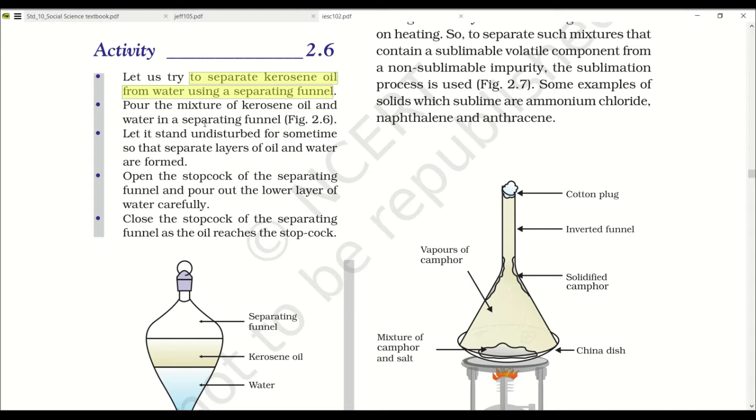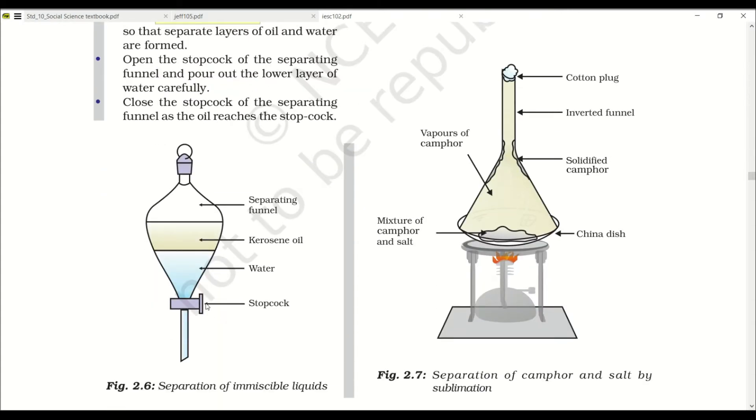To separate kerosene oil and water using a separating funnel, pour the mixture in the funnel. Let it stand undisturbed for some time so that separate layers of oil and water are formed. Here is the stopcock that is to be opened very cautiously. Open the stopcock and pour out the lower layer of water carefully. When the kerosene level comes, you have to turn off the stopcock so that kerosene remains here and water is separated in another beaker. Close the stopcock as the oil reaches it.